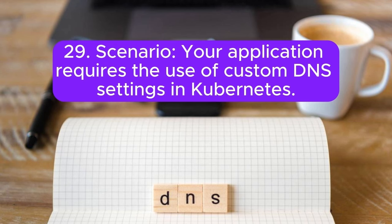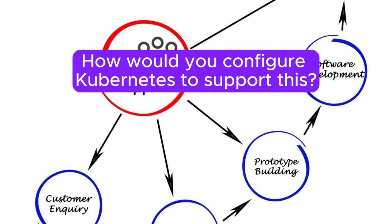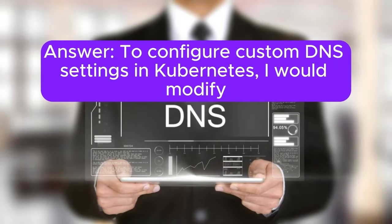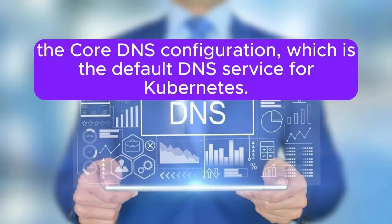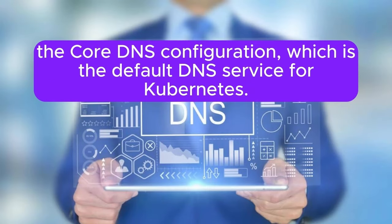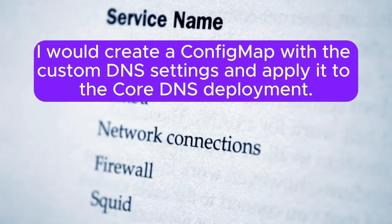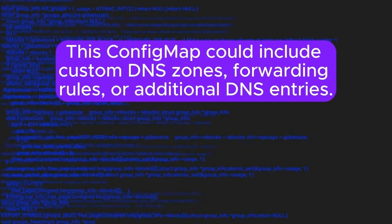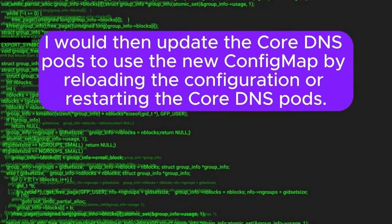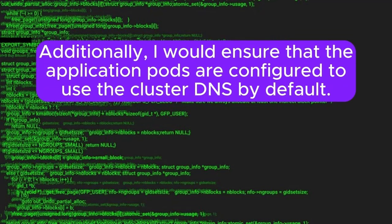Scenario 29: Your application requires the use of custom DNS settings in Kubernetes. How would you configure Kubernetes to support this? Answer: To configure custom DNS settings in Kubernetes, I would modify the CoreDNS configuration, which is the default DNS service for Kubernetes. I would create a ConfigMap with the custom DNS settings and apply it to the CoreDNS deployment. This ConfigMap could include custom DNS zones, forwarding rules, or additional DNS entries. I would then update the CoreDNS pods to use the new ConfigMap by reloading the configuration or restarting the CoreDNS pods. Additionally, I would ensure that the application pods are configured to use the cluster DNS by default.